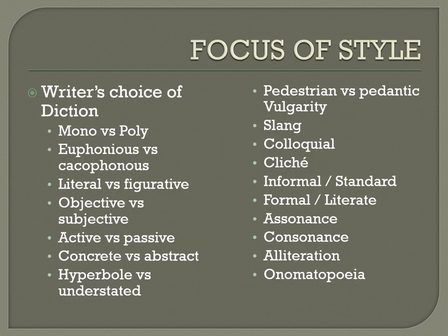Here are examples of diction which writers can choose as a focus of their style: mono vs. poly, euphonious vs. cacophonous, literal vs. figurative, objective vs. subjective, active vs. passive, concrete vs. abstract, hyperbole vs. understated, pedestrian vs. pedantic, vulgarity, slang, colloquial, cliché, informal or standard, formal, literate, assonance, consonance, alliteration, and onomatopoeia. These are all figures of speech that focus on the sound and the meaning of words.